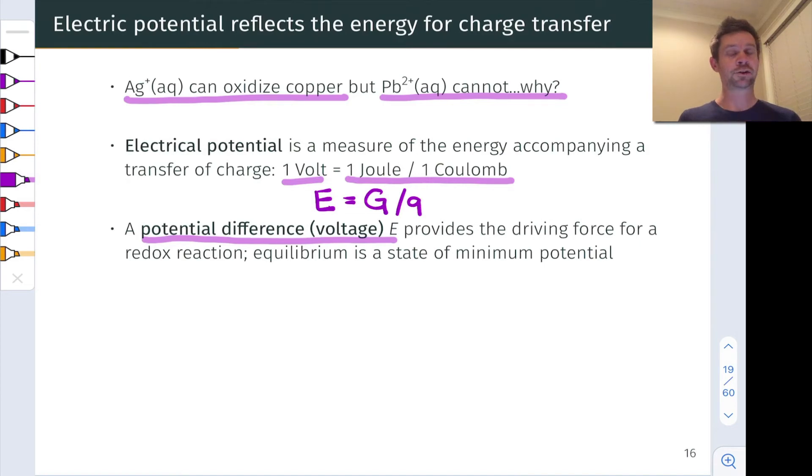The spontaneous redox reaction is associated with an electrical potential difference and that is the voltage that we measure across the galvanic cell. Now this will always be in the situation of non-equilibrium.